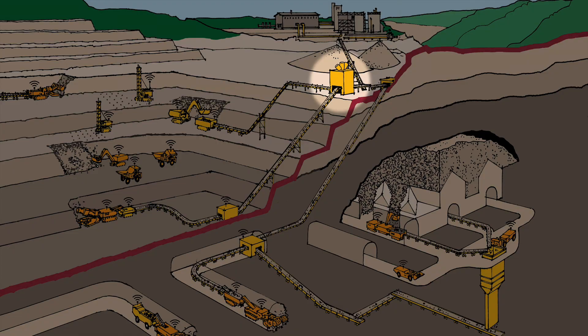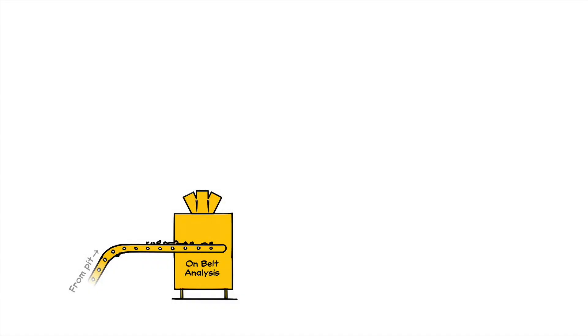Once ore has been extracted from the mine and placed on a conveyor belt, sensors allow us to measure the value of ore as it passes along the conveyor belt. This allows ore to be split into different processing paths.